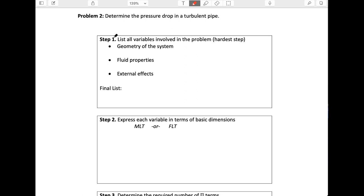First thing we're going to do, list all the variables involved in the system. So the geometry could be the diameter, the length, and some measure of the roughness of the pipe that we'll call epsilon. Usually that's like an average size of the bumps in the wall. Fluid properties that might be relevant include viscosity and density. External effects, we're driving this thing at some flow velocity, so we'll call that V. So those are all the things that could affect what we're after, which is delta P.